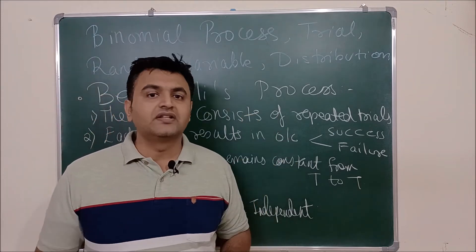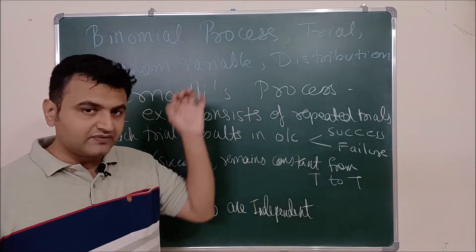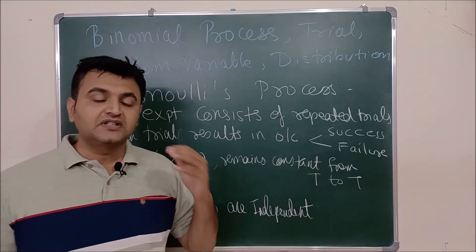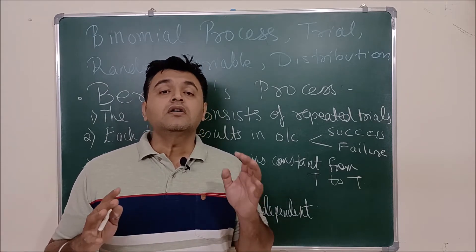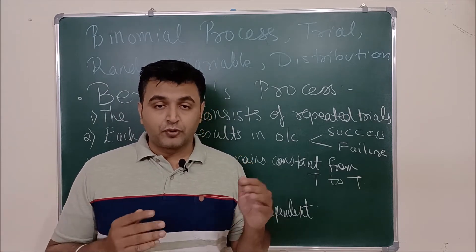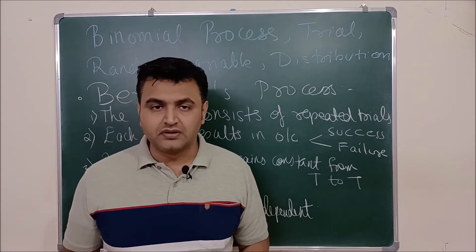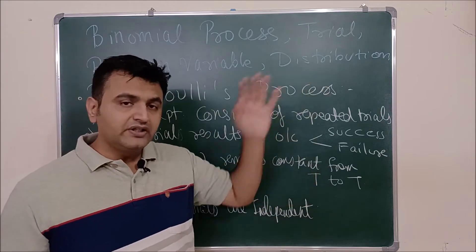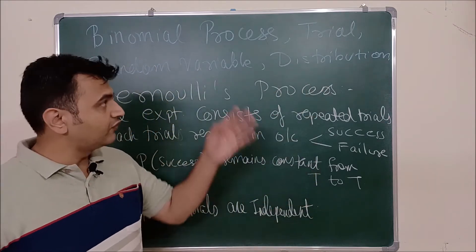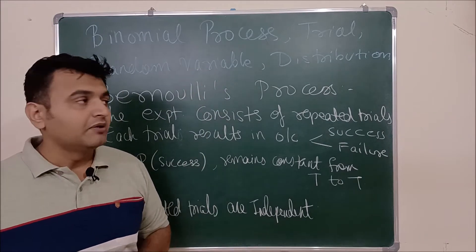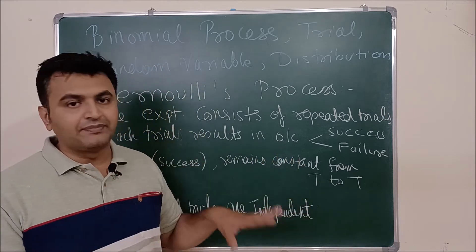This is not a new thing you are studying. You have already studied discrete random variables, and this is a special case of a discrete random variable. After studying discrete random variables, we saw the concept of probability mass function — it is nothing but the probability distribution for the discrete random variable. Here also, Bernoulli distribution is nothing but the probability mass function for the Bernoulli random variable.